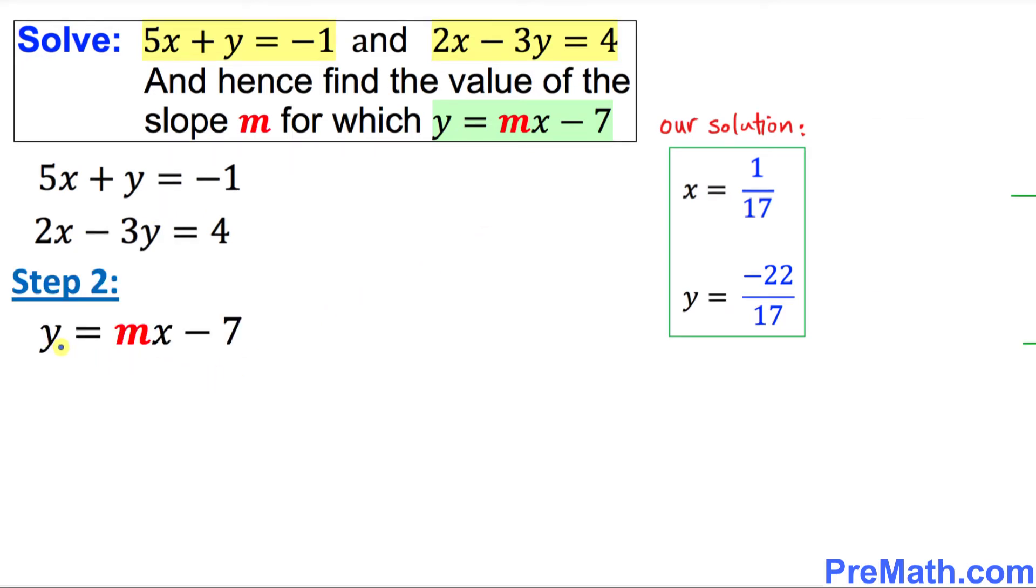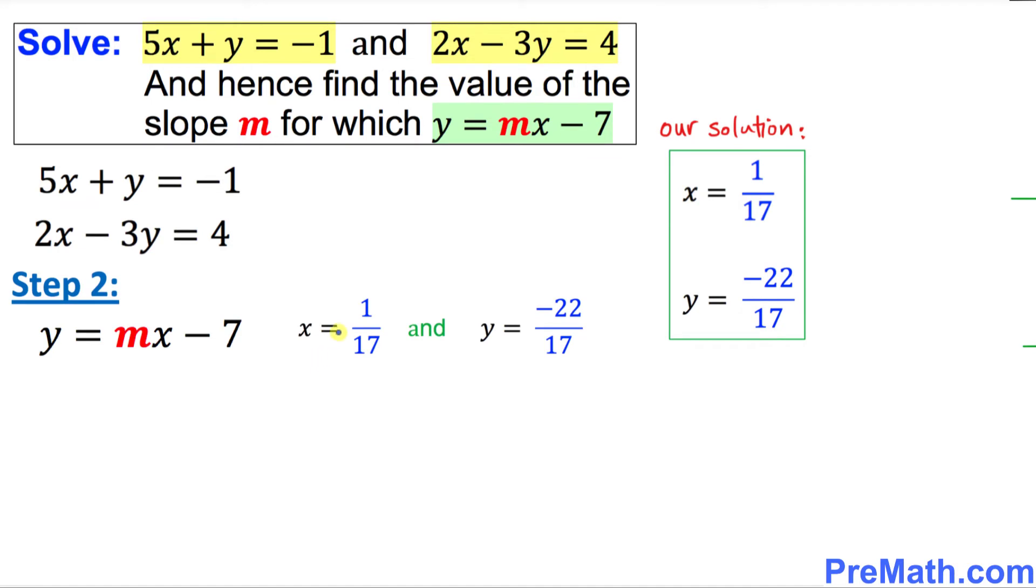In step number 2, I have just put down y = mx - 7 as our third linear equation. We are going to find the value of m, and here are our x and y values. So wherever you see x I am going to replace it by 1 over 17, and wherever you see y I am going to replace it by negative 22 over 17. Let's fill in the blank now.